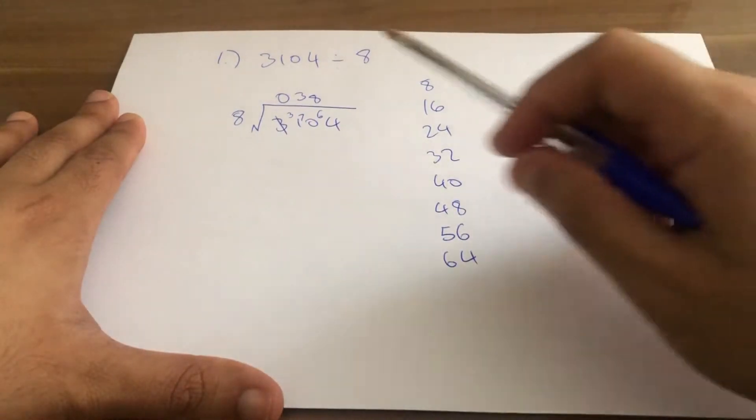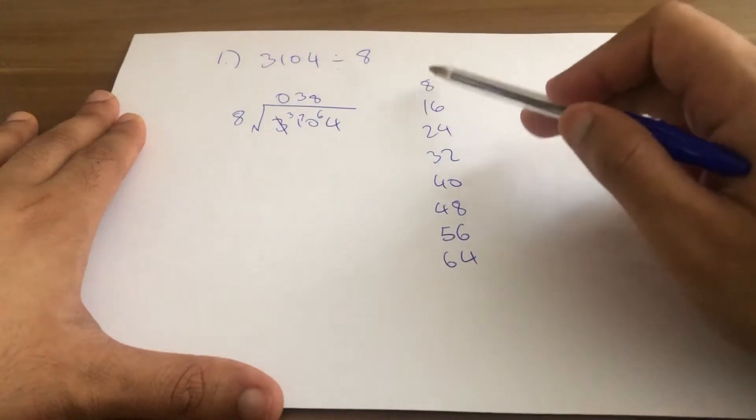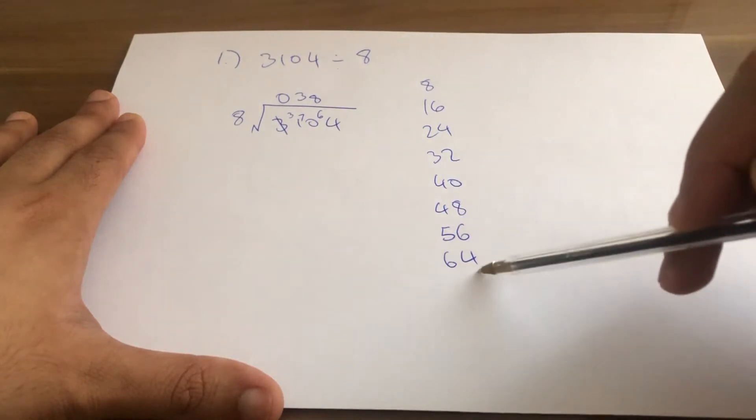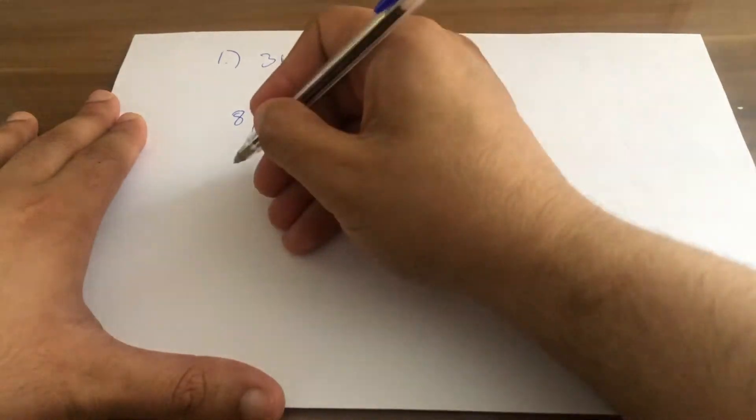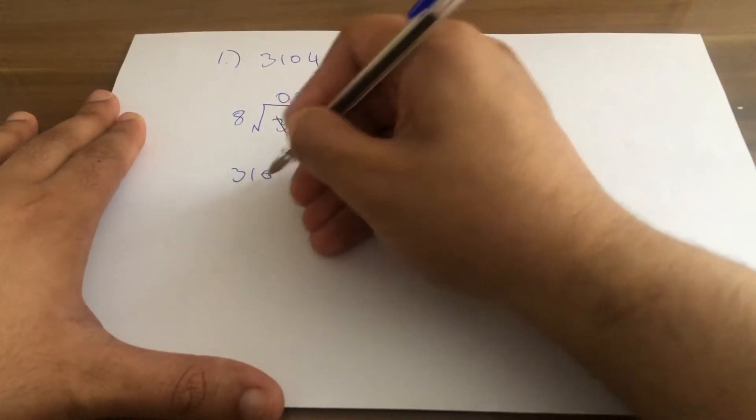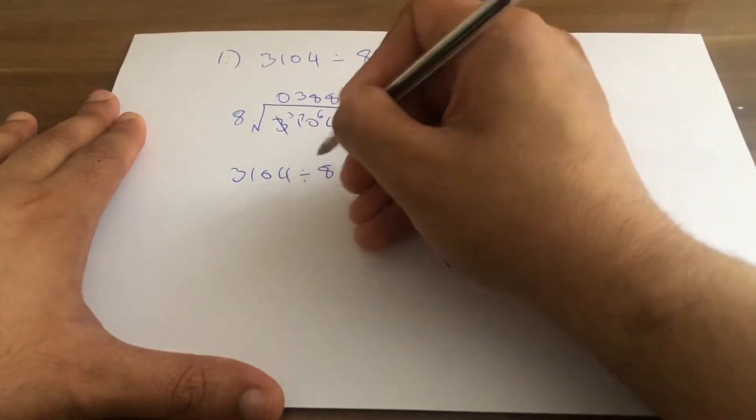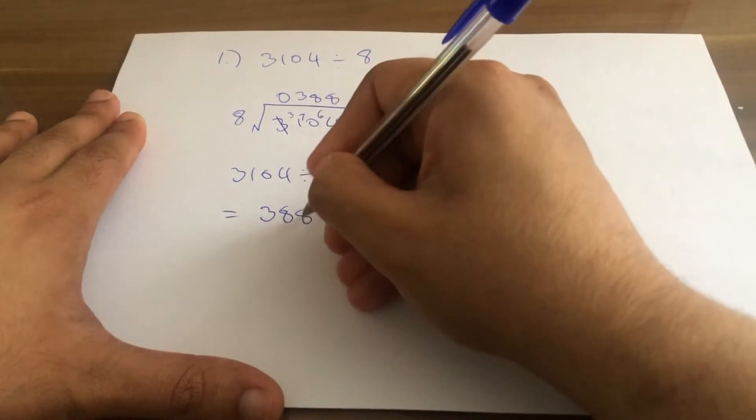And how many times does 8 go into 64? 1, 2, 3, 4, 5, 6, 7, 8, remainder 0. So the answer in fact is 3104 divided by 8 gives us 388.